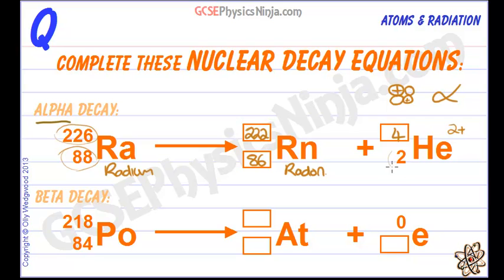It has two protons so the atomic number is two. Okay, moving on to beta decay.